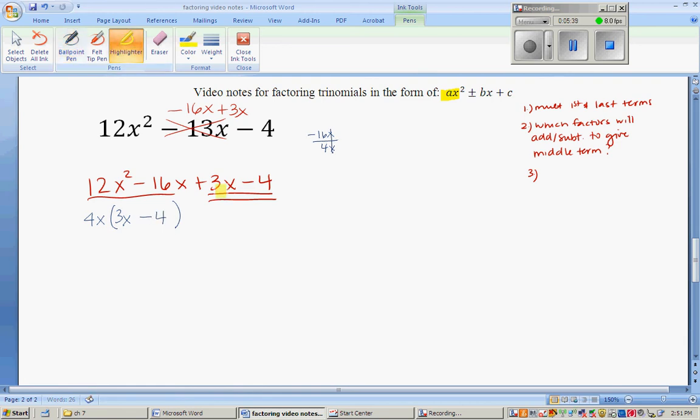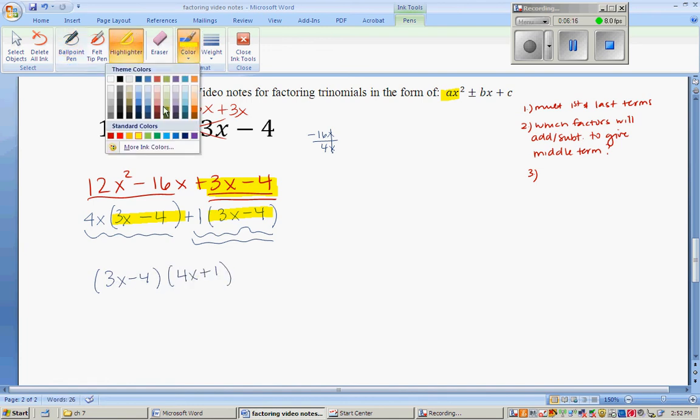Now you might be worried about this 3x minus 4 because they really don't have anything in common. They have a 1 in common. We're going to take out a 1 and it's going to be a positive 1. You must have a sign here. And we're left with 3x minus 4. You know you factored it correctly if in this number and in this set of numbers you have the same thing. And we do. 3x minus 4 and another 3x minus 4. So what do we do? We pull out the 3x minus 4 and all that's left is the 4x plus 1. And so that's how you factor.